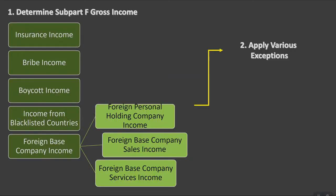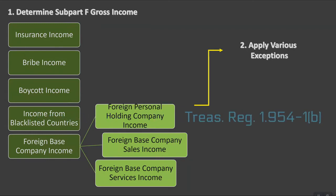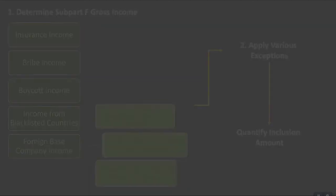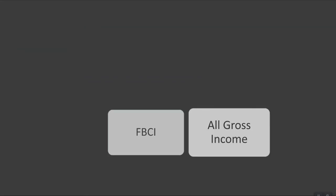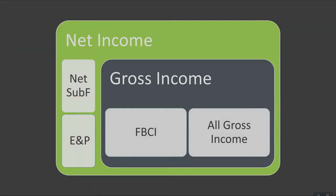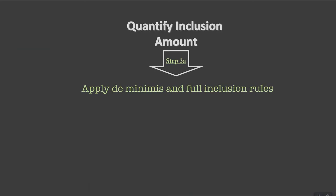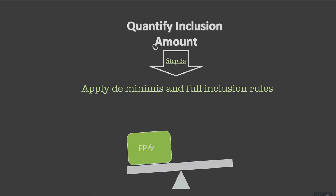Once subpart F income is determined — essentially steps 1 and 2 of the computation — Treasury Regulation 1.954-1b provides special rules for further determining the adjusted amount of the deemed inclusion attributable to the identified gross foreign-based company income amount. U.S. taxpayers should first do an analysis on a gross income basis, and then on a net income basis. Let's walk through the final part, Step 3, which has several components. First, taxpayers apply the de minimis and full inclusion rules to foreign-based company gross income determined in Step 1. The overall gross income amounts considered to be subpart F are compared to the total amount of all gross income earned by the CFC. Our foreign personal holding company income and foreign-based company sales and services income are compared to total gross income on a CFC-by-CFC basis.